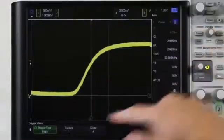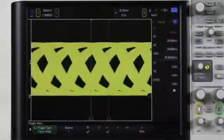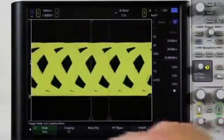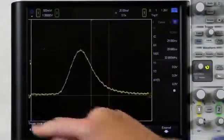As you can see, a fast update rate allows you to find infrequent events that other scopes may miss. You can then use infinite persistence combined with the powerful triggering on the 4000X to isolate those infrequent and rare events.